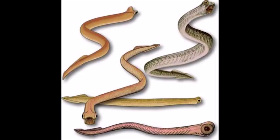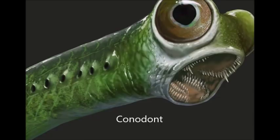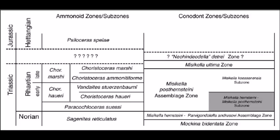One example of an index fossil, and the one the PBS video chose, is the conodont. Conodonts are jawless chordates, classified in the superclass Agnatha, that first appeared in the Cambrian and went extinct at the end of the Triassic. Due to their widespread distribution and distinct species, the chronological order of many different layers is defined by the presence of certain conodonts. For example, the last age of the Triassic is the Rhaetian, the start of which is defined by the presence of the conodont Misikella posthernsteini.